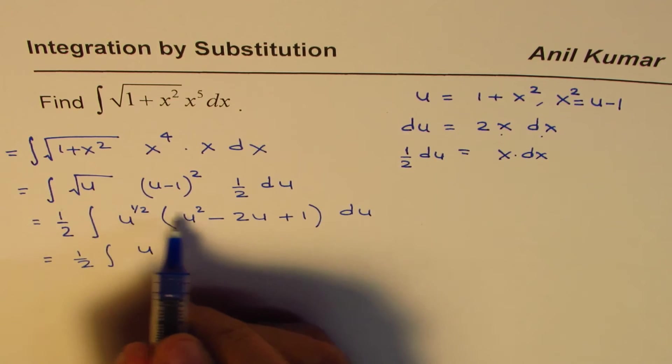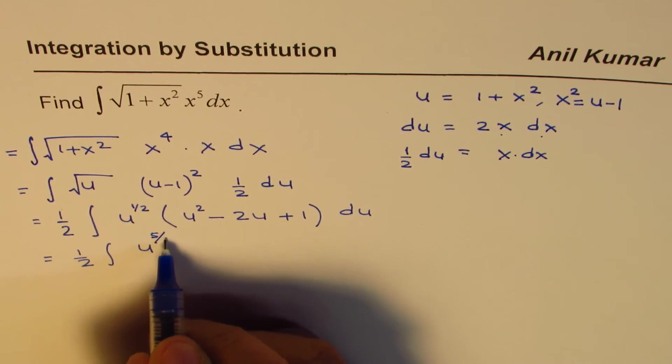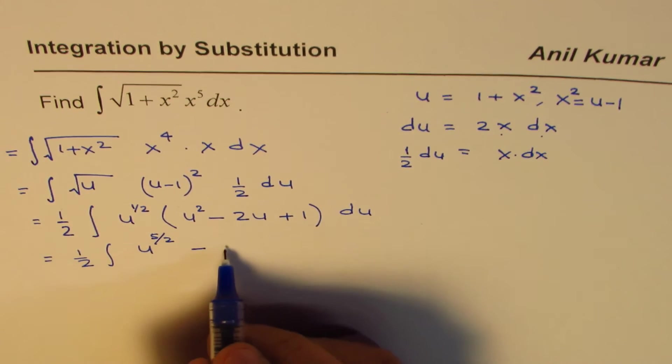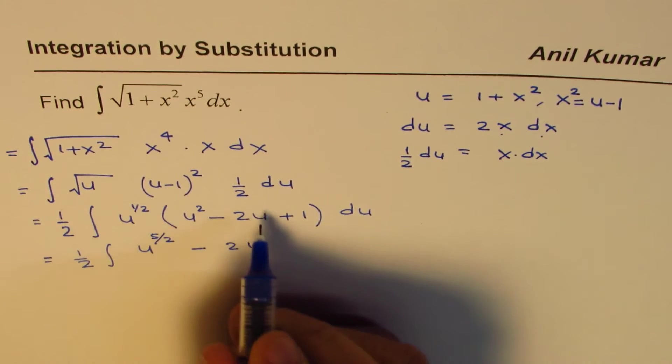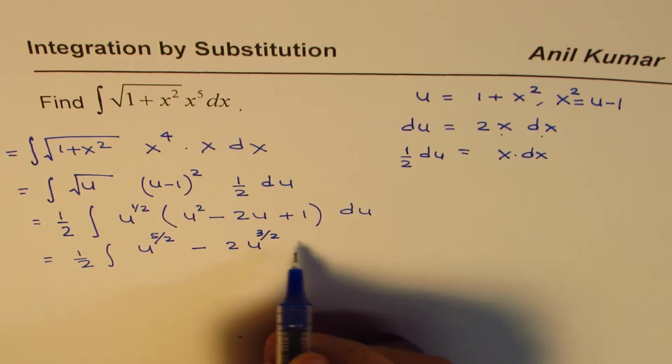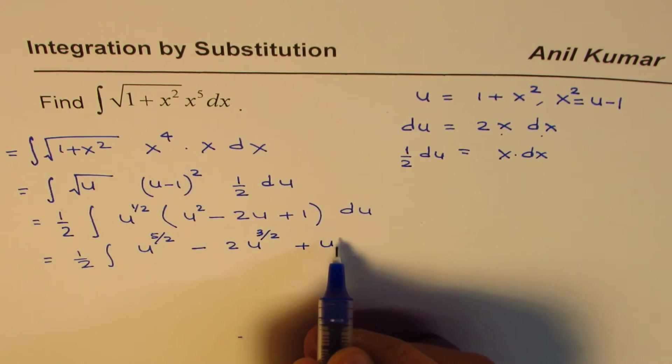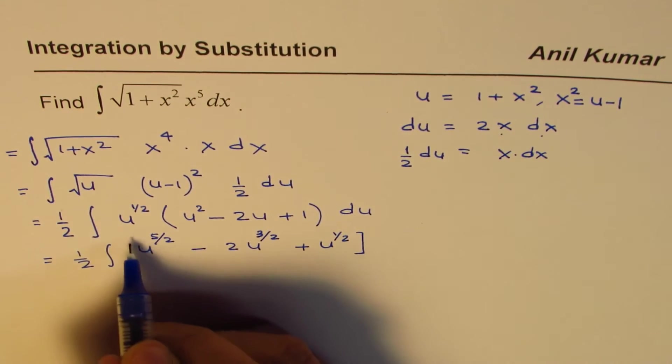That means 5/2 minus 2 times u to the power of half plus 1, that is 3/2, plus u to the power of half, du.